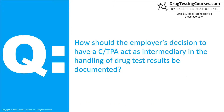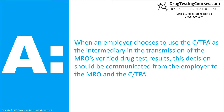How should the employer's decision to have a Consortium Third-Party Administrator, CTPA, act as intermediary in the handling of drug test results be documented? When an employer chooses to use the CTPA as the intermediary in the transmission of the MRO's verified drug test results, this decision should be communicated from the employer to the MRO and the CTPA.